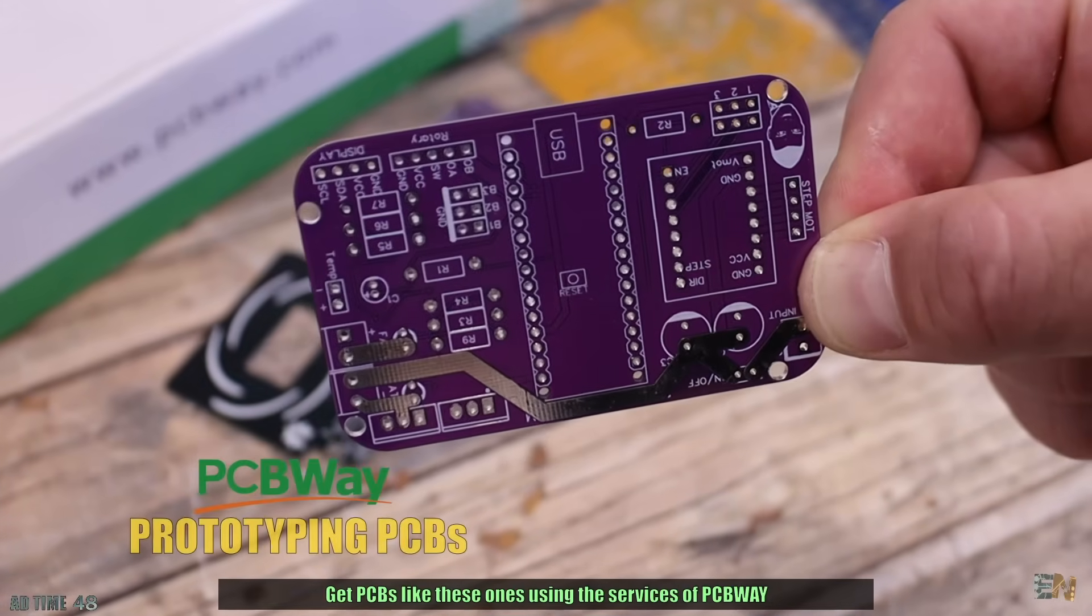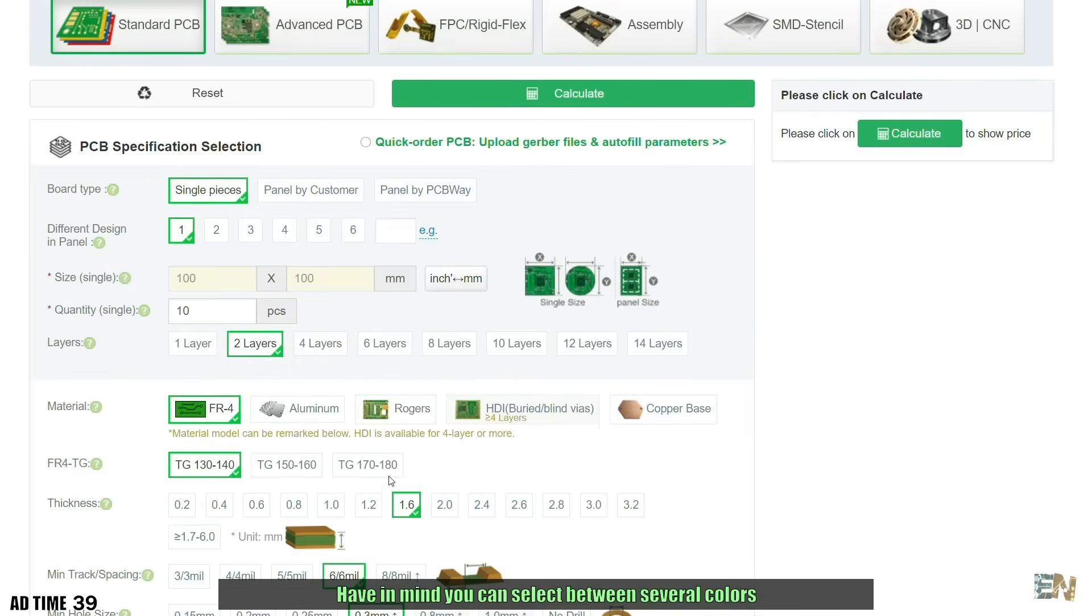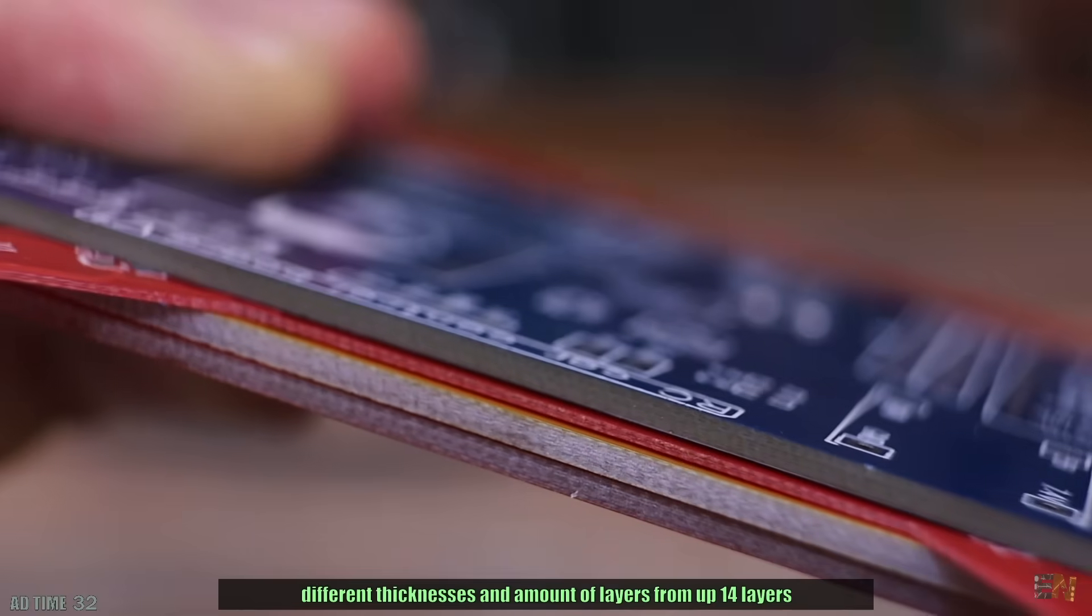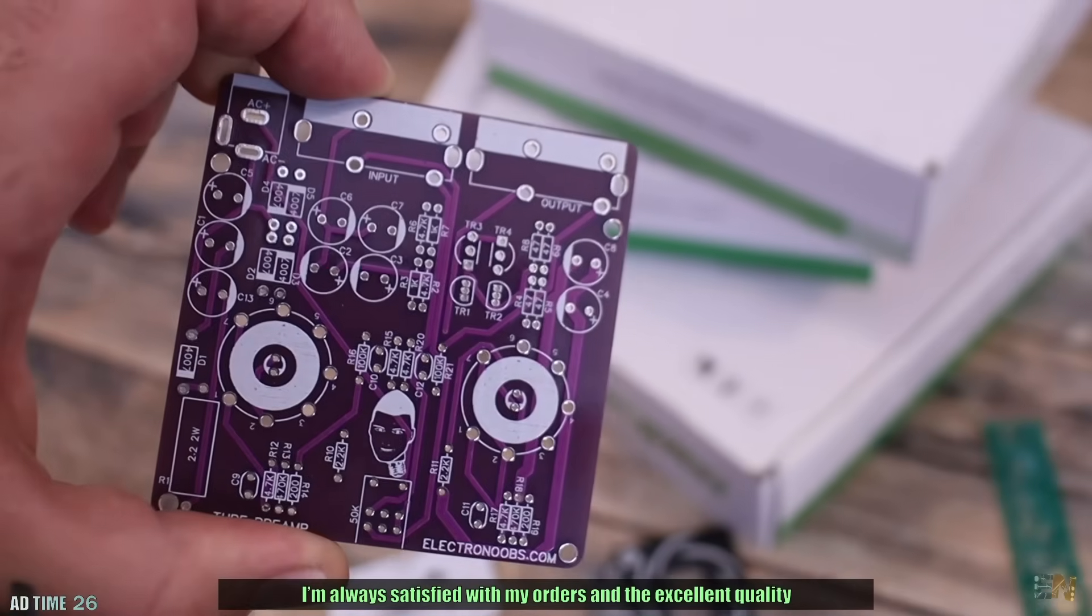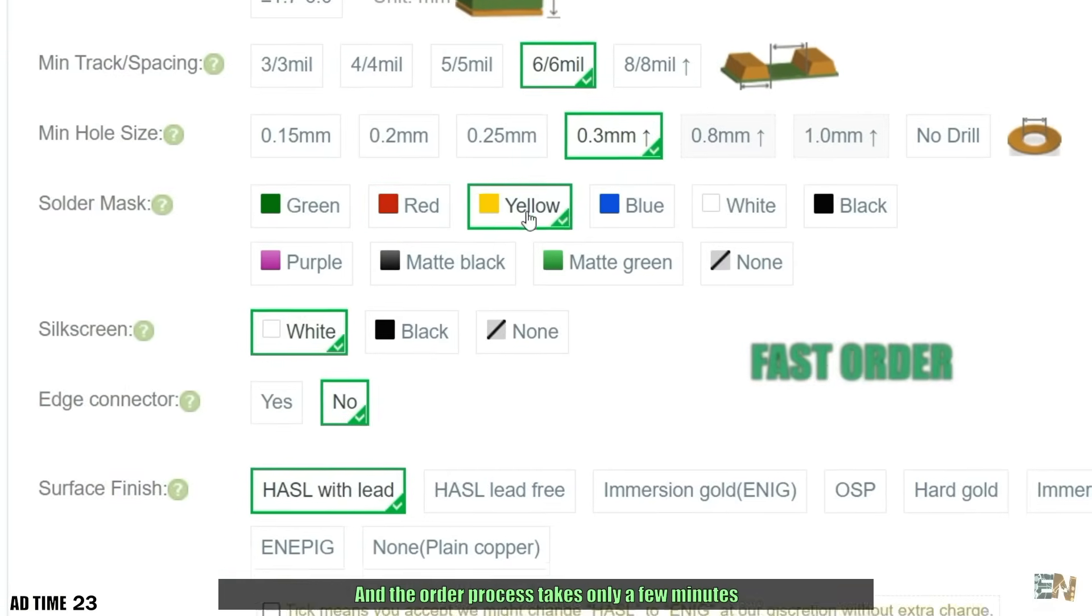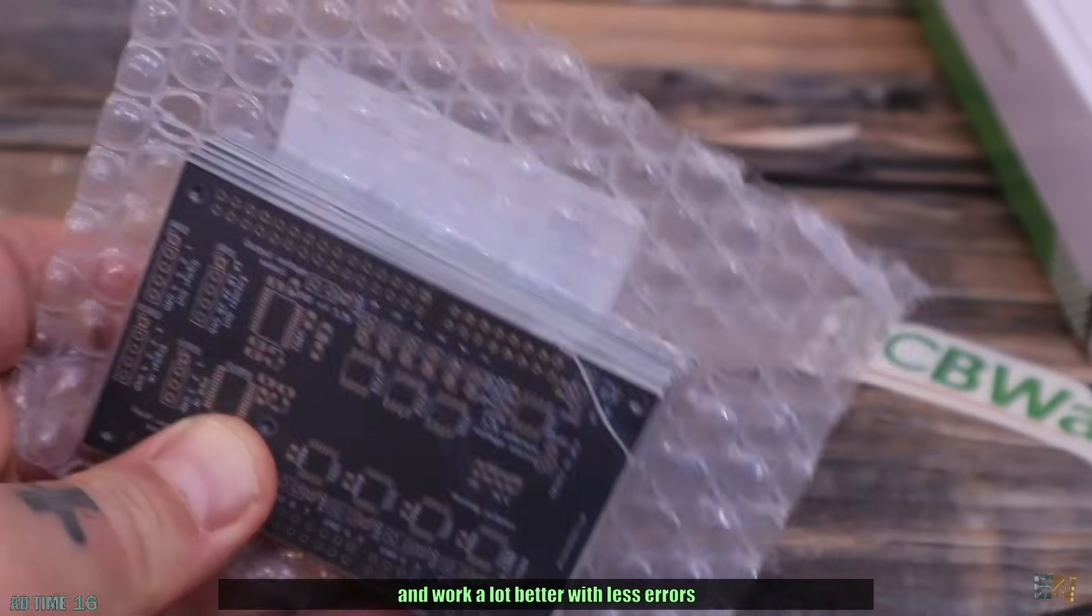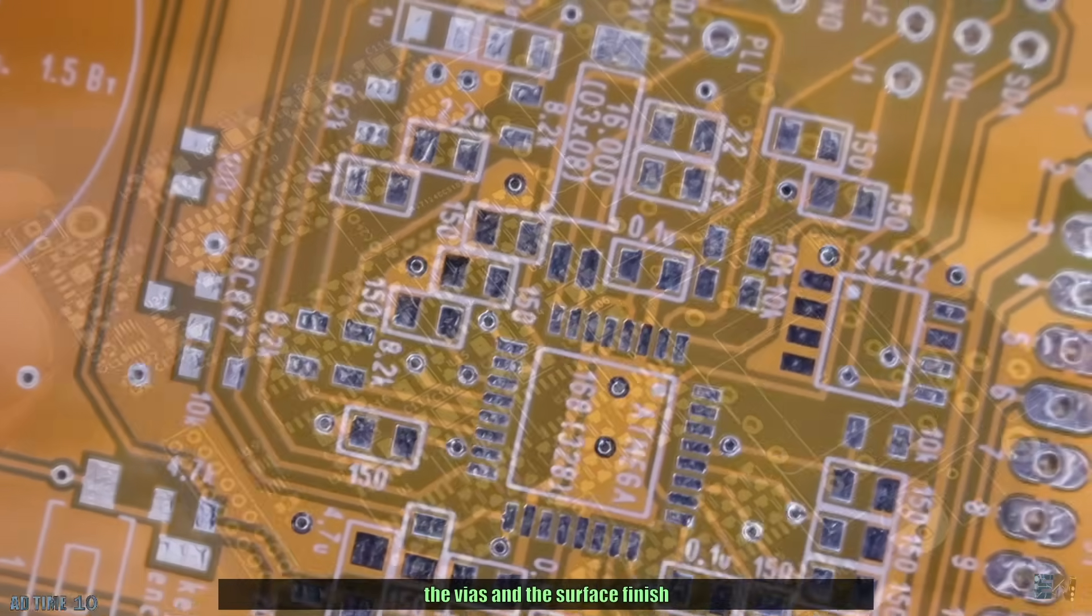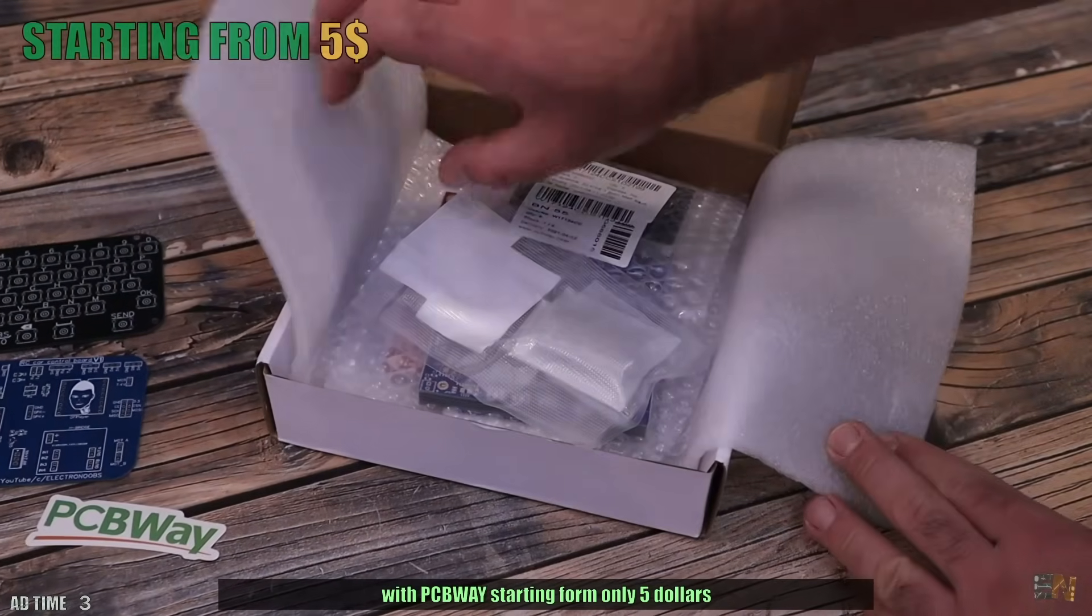Get PCBs like these ones using the services of PCBWay with amazing quality and incredible prices. Just upload your Gerber files to their website pcbway.com. You can select between several colors, gold plated pads for better conductivity, different thicknesses and amount of layers up to 14 layers. I am always satisfied with my orders and the excellent quality. The order process takes only a few minutes and in just a few days I receive my PCBs well packed. Now my projects are more professional and work a lot better with less errors. Excellent tracks and good precision for the pads, the vias and the surface finish. Improve your projects by ordering your PCBs with PCBWay, starting from only $5.